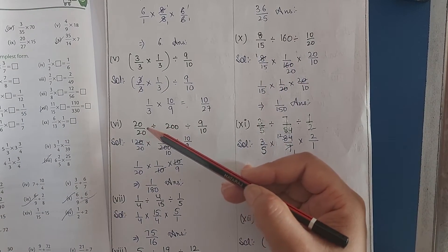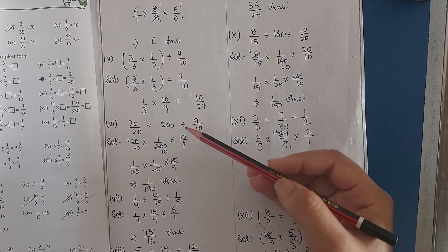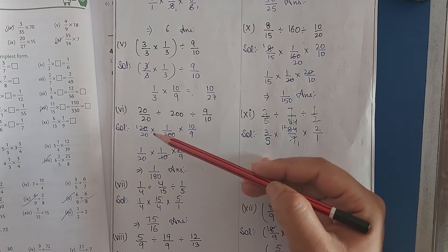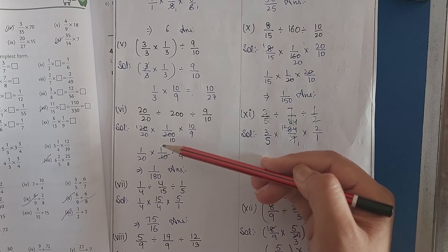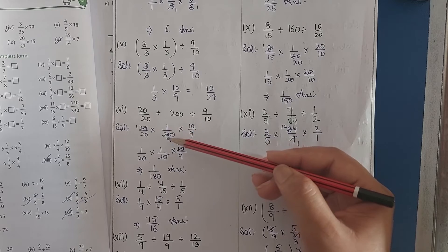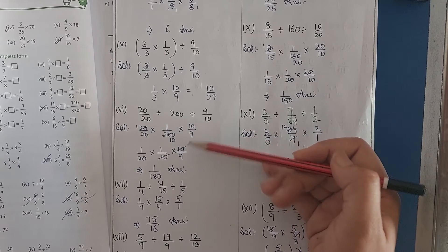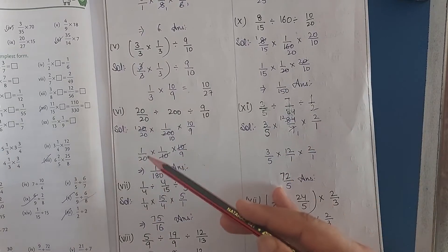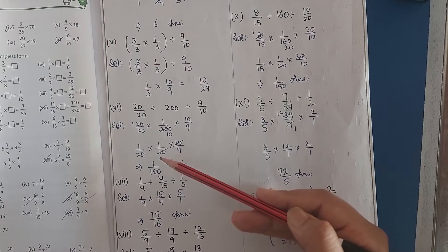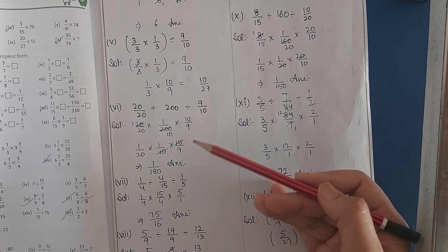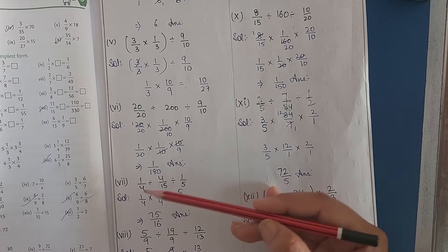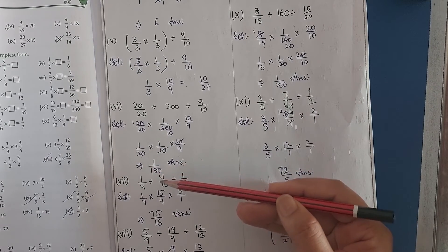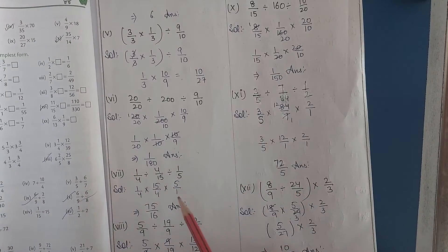Moving to our next question: 20/20 divided by 200, divided by 9/10. So firstly, converting division into multiplication and taking the reciprocal of the second term. The reciprocal of 200 is 1/200, multiplied by 10/9. So 20×1 is 20, 20×10 is 200. That is 1/20 multiplied by 1/10, multiplied by 10/9. Cancel 10 with 10; our answer will be 1 over 20×9, that is 1/180.